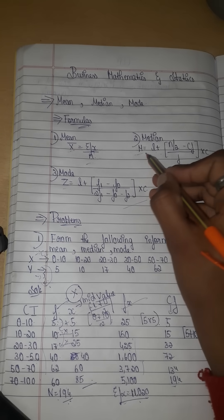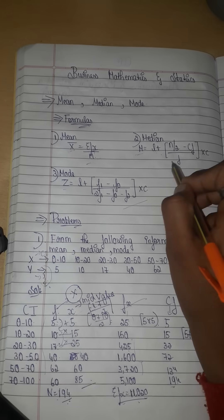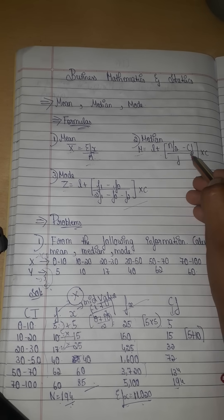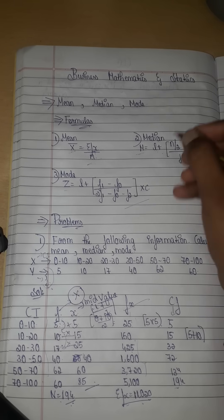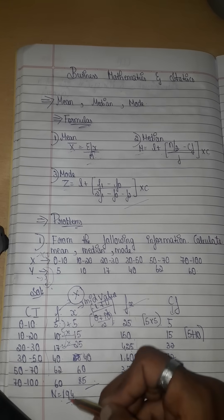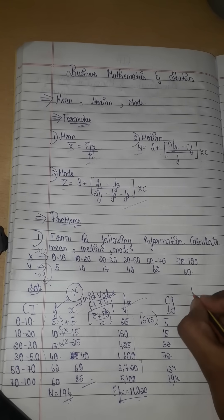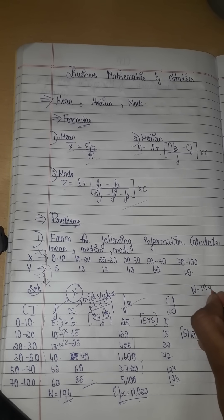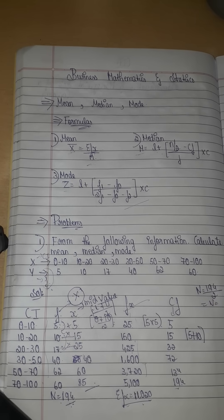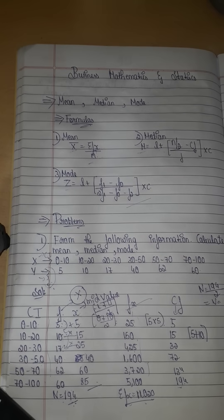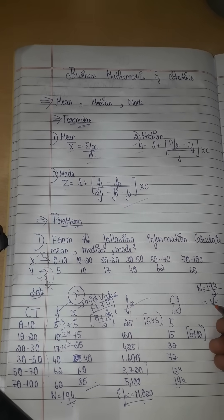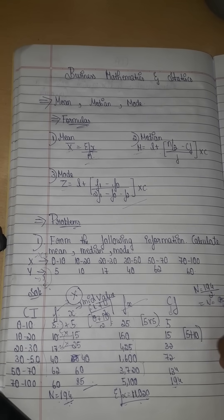The median formula is: L plus (n by 2 minus cf) divided by f, into c. Now we have the cf column. We find n by 2: n equals 194, so n by 2 equals 194 divided by 2, which is 97.